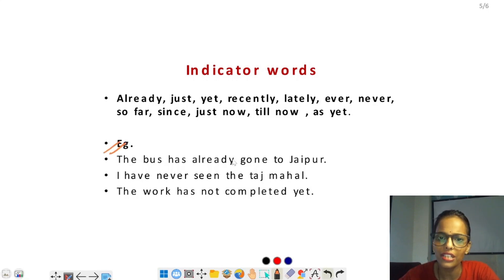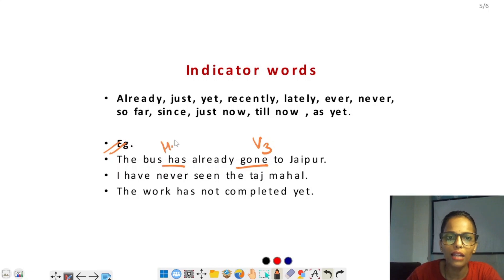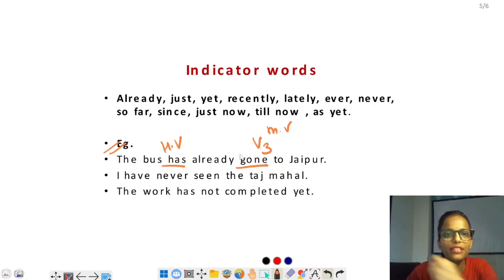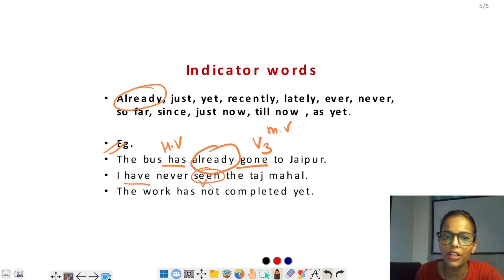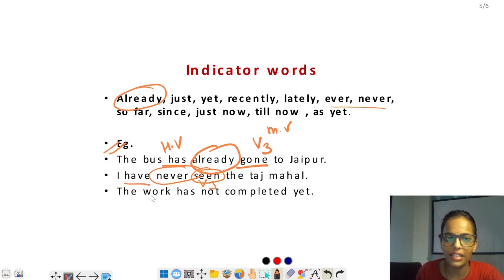Example: 'The boss has already gone to Japan' — देखो has लगा है और verb का third form 'gone' given है, यह helping verb है और यह main verb है। इसे और कैसे पहचानें? Indicating word 'already' given है। 'I have never seen the Taj Mahal' — I के साथ have लगेगा, seen verb का third form है, indicating word 'never' है जो present perfect tense का होता है।